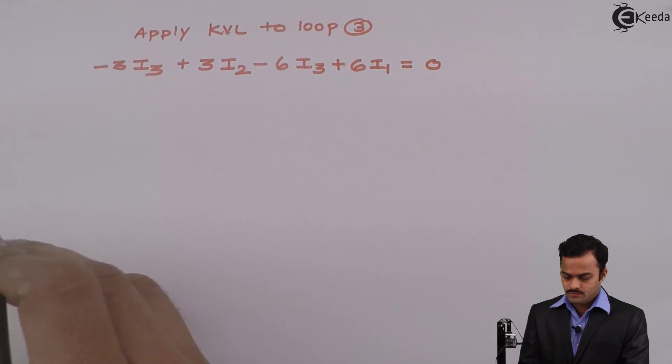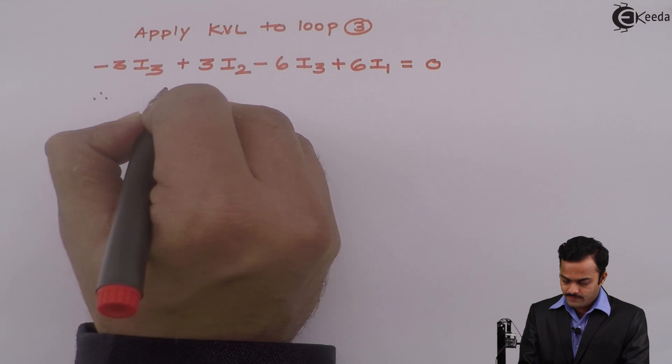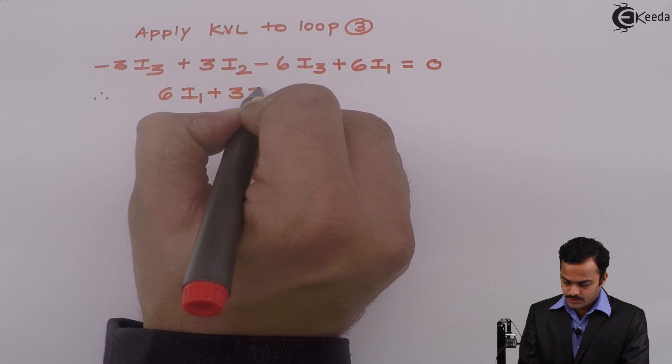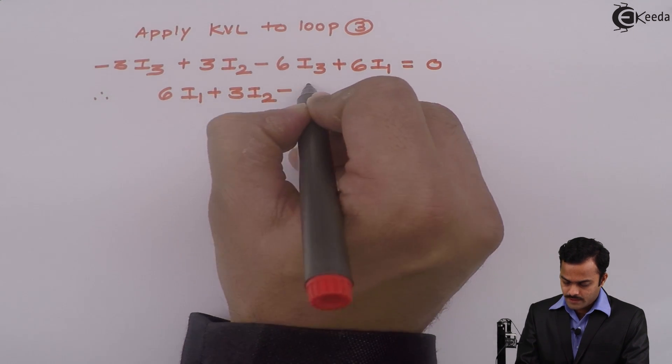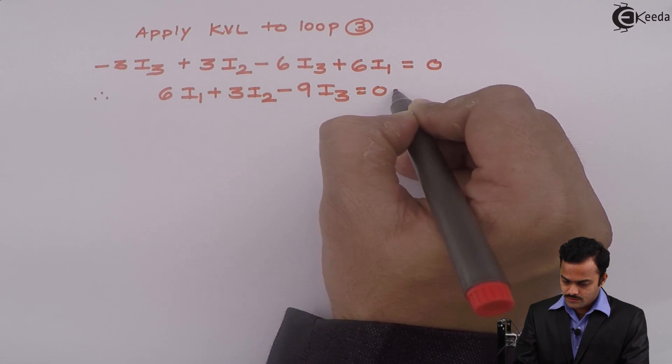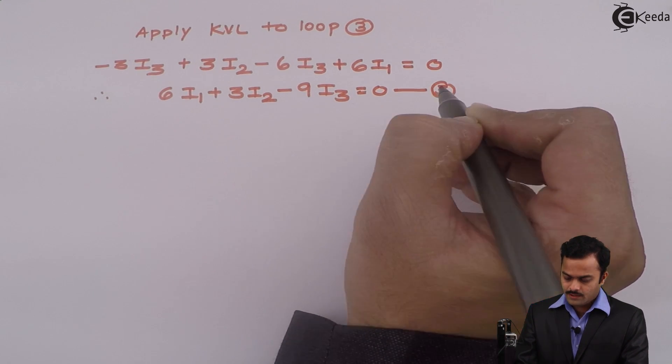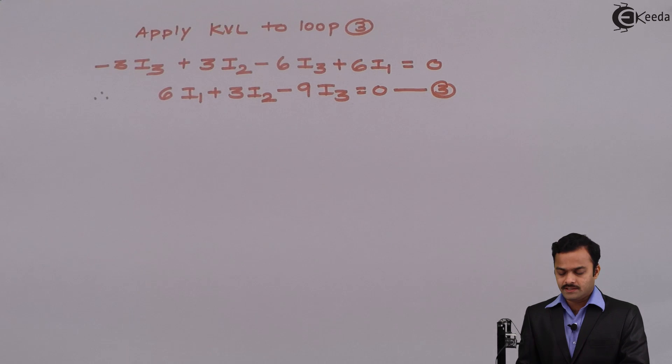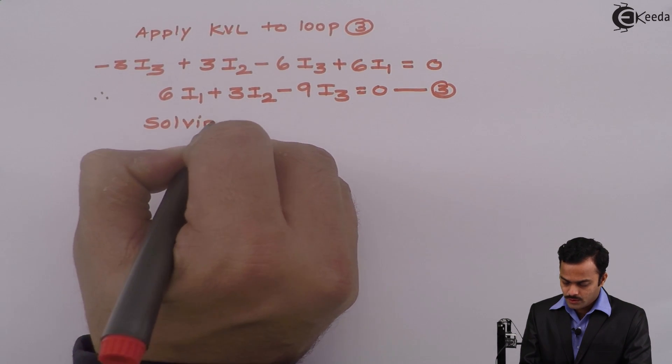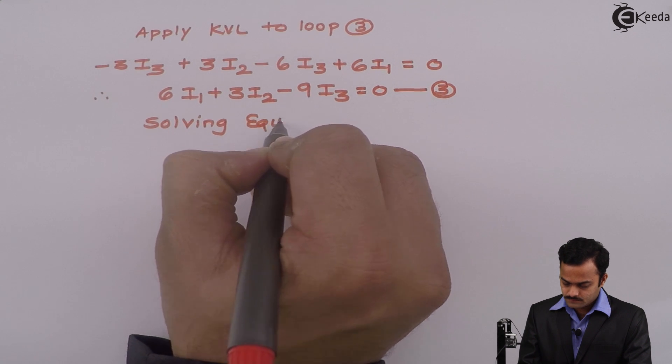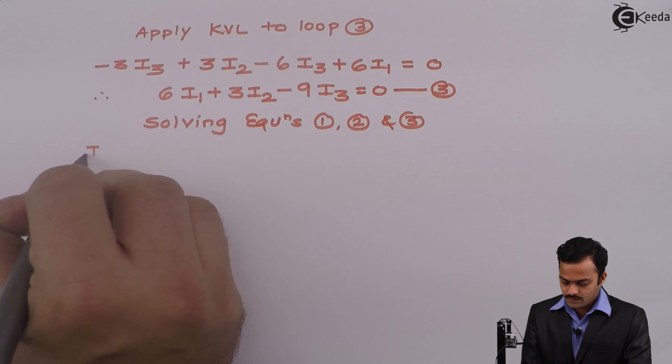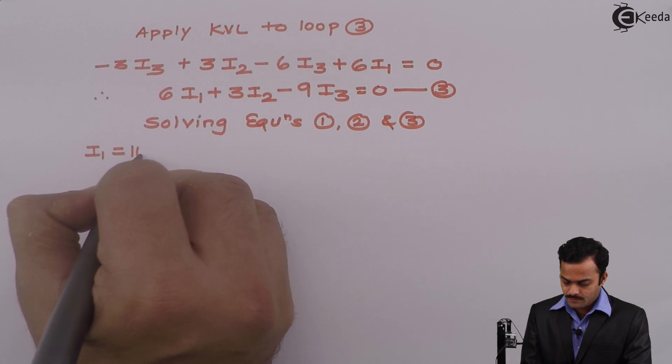If I rearrange the terms I will get 6 I1 plus 3 I2 minus 9 I3 equal to 0. I will get equation number 3. Solving equation 1, 2, and 3, I will get I1 as 10 ampere.